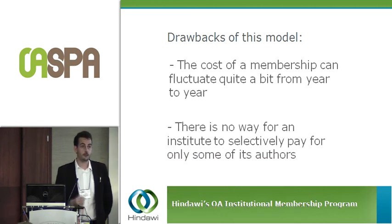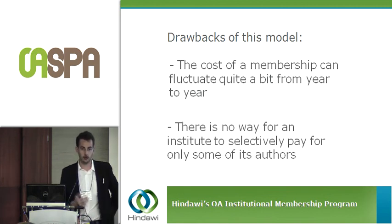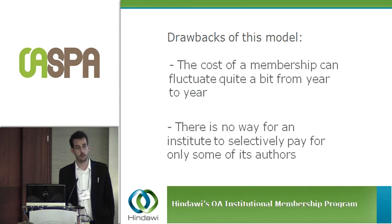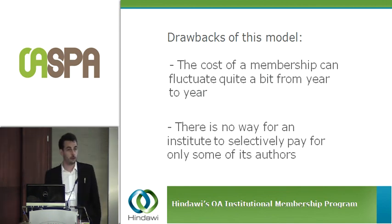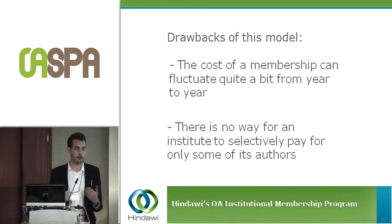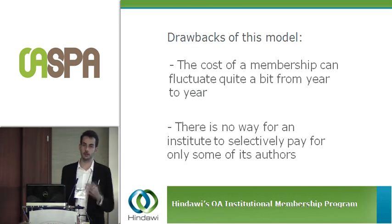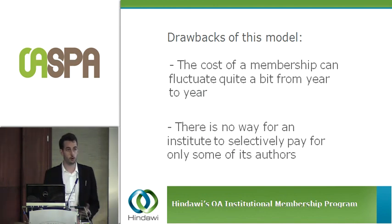The other issue is there's no way to selectively choose what gets covered. Some members have said they'd like more discretion — for example, authors who don't have research funding should be eligible, but authors who do have research funding wouldn't be eligible for the membership. In the way our model works, that's not really possible, because we feel it's important to tell authors at the time of submission whether they're going to be covered. We don't want the uncertainty of them having to apply and then potentially find out they're not eligible after acceptance.